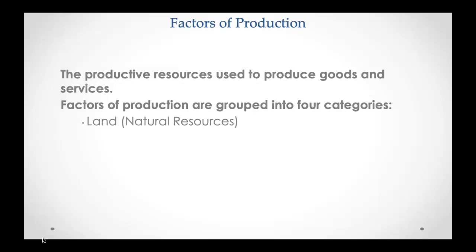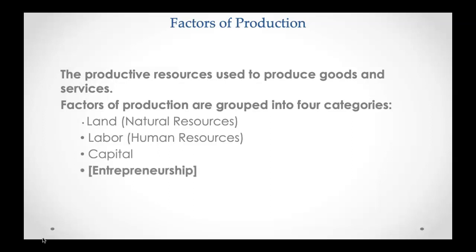Here in the States we do four categories. Land is the nickname for natural resources. Labor is the nickname for human resources. Capital is short for capital resources. And here in the United States, we also put entrepreneurship as a fourth category. Other countries tend to put entrepreneurship in the labor category, but here in the U.S. we treat it as a separate one, so that's the way I'll teach it.